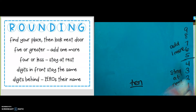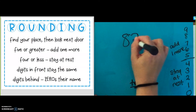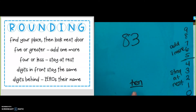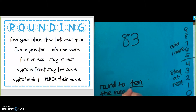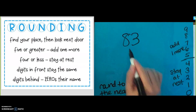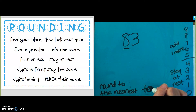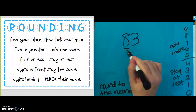I'm going to give us a number, and I'm going to write it down, and it will be 83. Down here, it tells us we're going to round to the nearest 10. All right, so what we need to do is this: Find your place. Our place is the tens place. I'm going to underline the 8, the tens place. Find my place, then look next door. Next door is a 3.